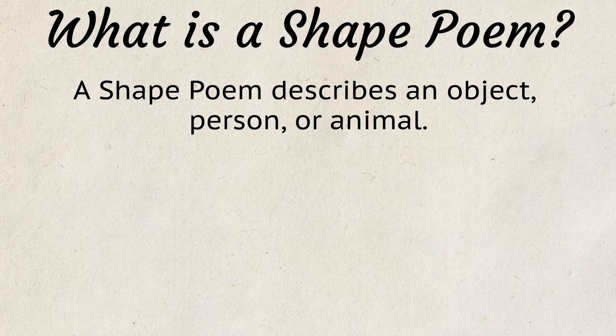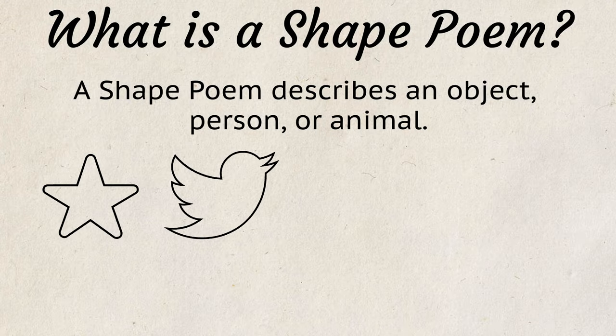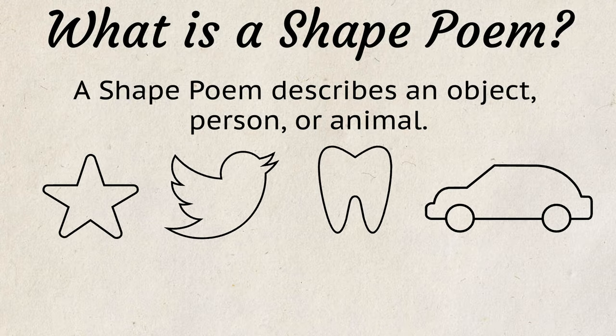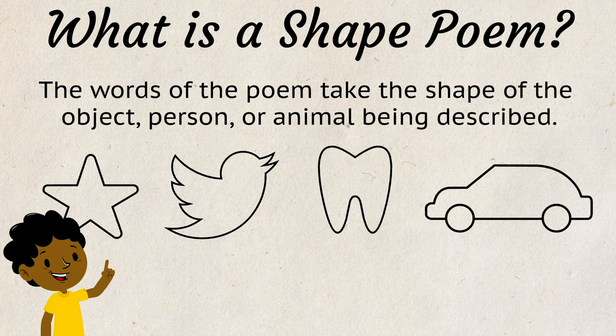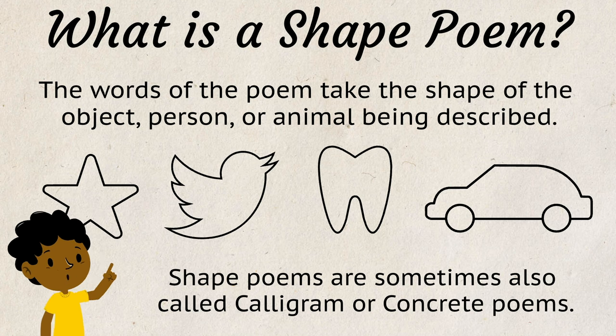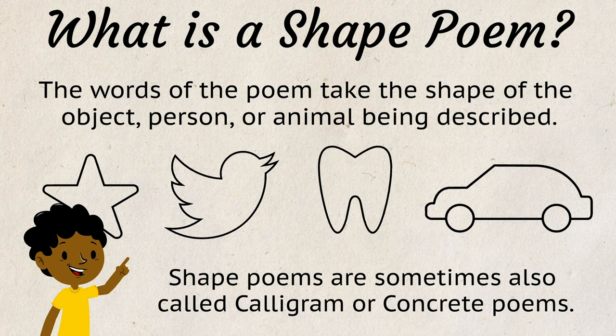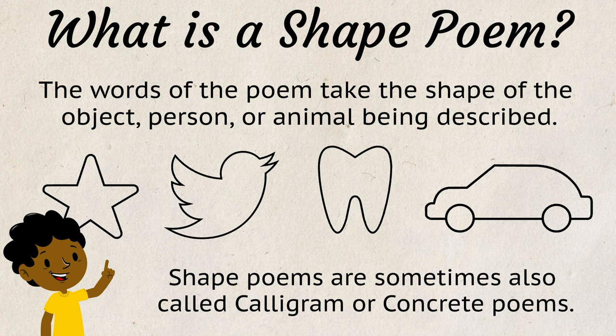A shape poem describes an object, person, or animal. The words of the poem take the shape of the object, person, or animal being described. Shape poems are sometimes also called caligram or concrete poems.